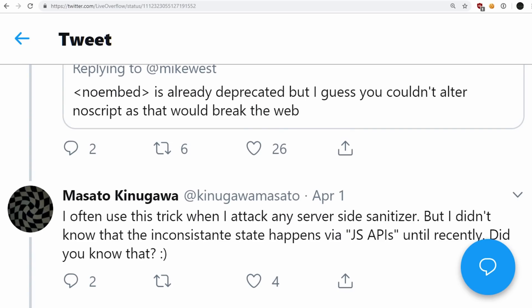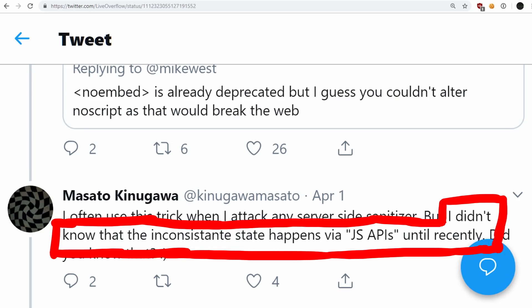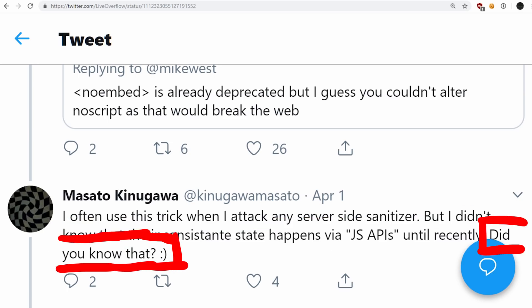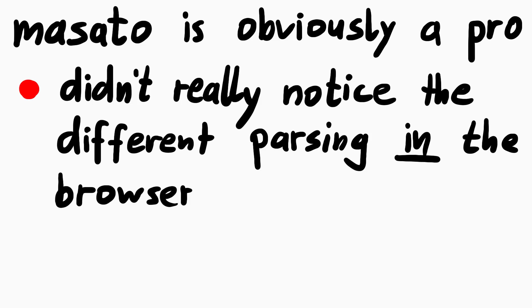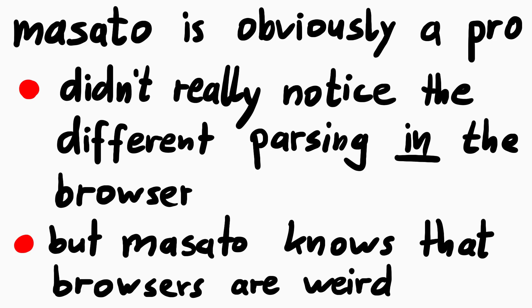Masato also added that he didn't know that the inconsistent state happens via JS APIs until recently. So even though he is super experienced, he apparently didn't realize that parsing with JavaScript functions can also be different. Masato has seen the browser and HTML parsers doing weird stuff all the time, and he told me that there were two behaviours he observed that ultimately led him to the discovery of the XSS.